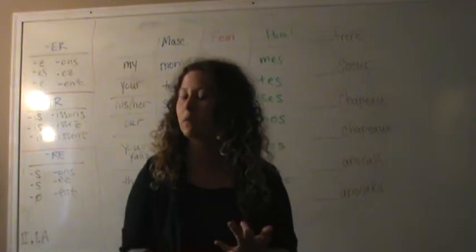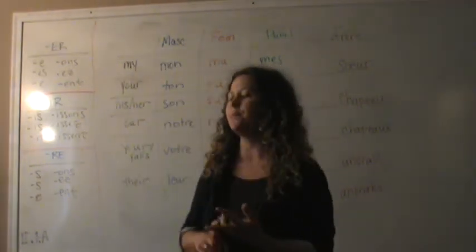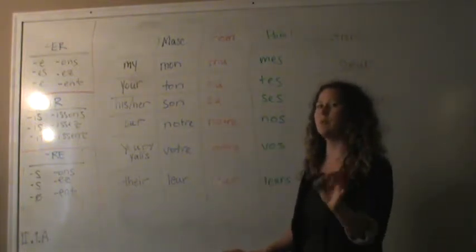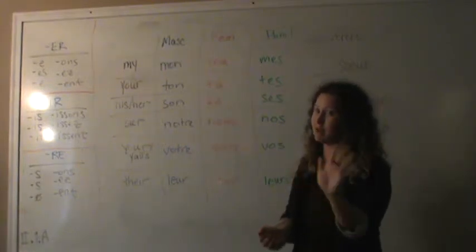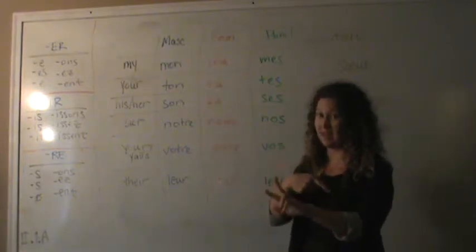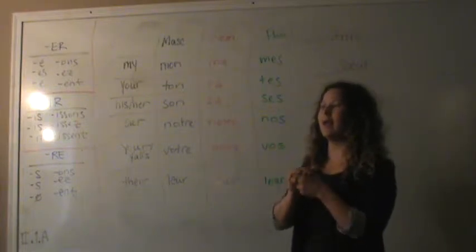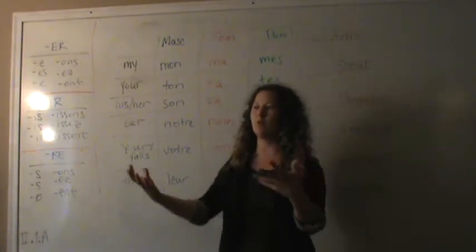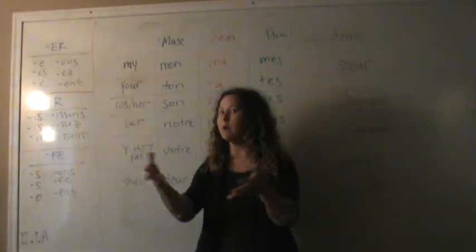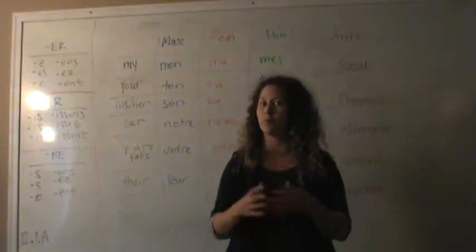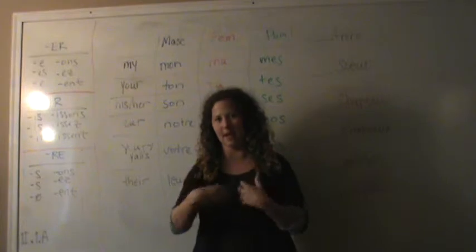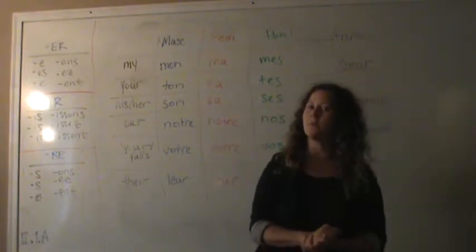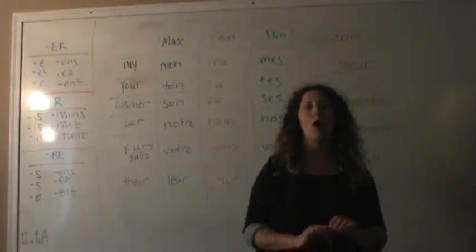You can see the conjugation of PARLER, which is to speak, FINIR, which is to finish, and PERDRE, which means to lose. Now, the possessive adjective chart. As you remember, everything in French, every noun, every person, place, or thing has gender. And one of the theories is that French is a really old language, and based on whatever god or goddess inhabited that particular object or ruled over that object, or person, or place, then that was the gender that that eventually became.